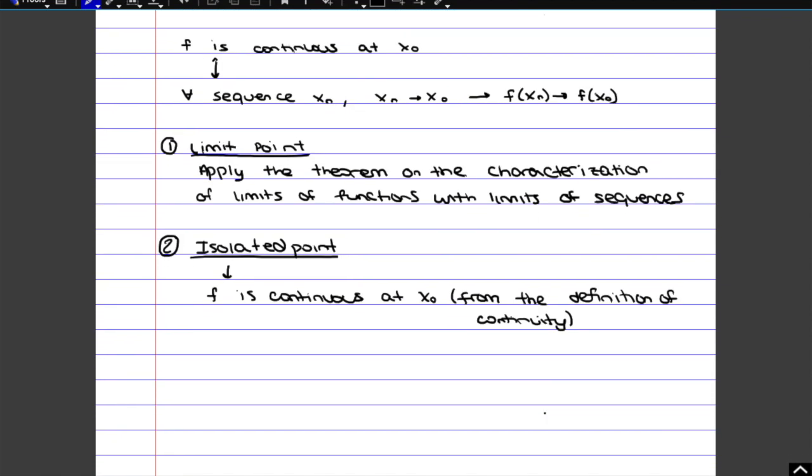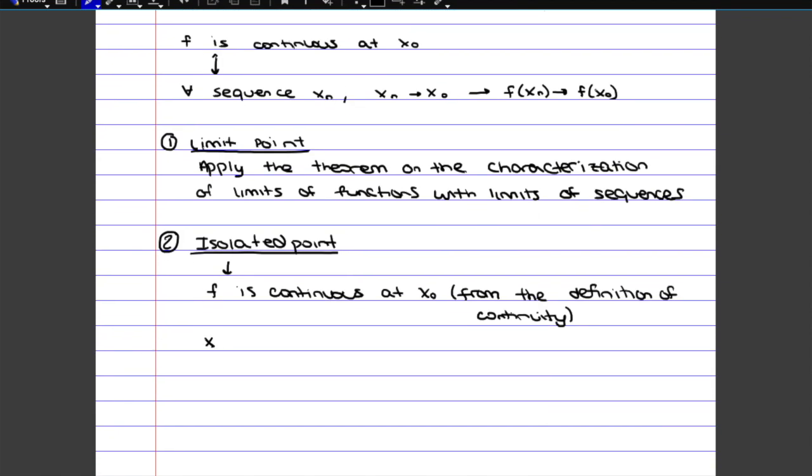So for this, we just have to find a sequence that tends to x0 for an isolated point. Keep in mind that an isolated point is completely separate from the rest of the function. If you have a function like this, these here would all be limit points, and an isolated point would be way over here. Since you can't actually have a sequence that approaches that point unless that sequence is just equal to that point, then in order for this to be possible, xn has to just equal that point all the time.